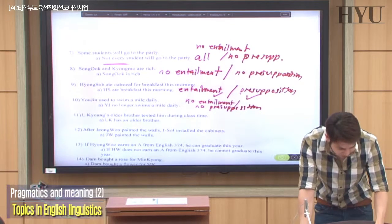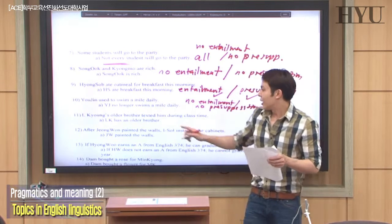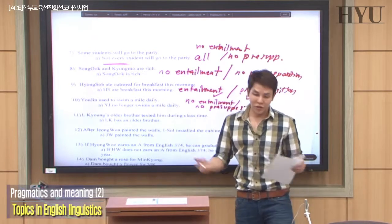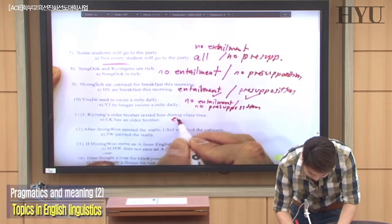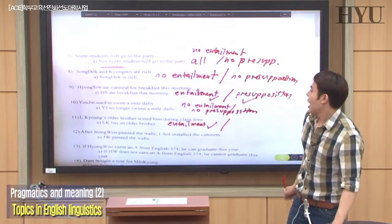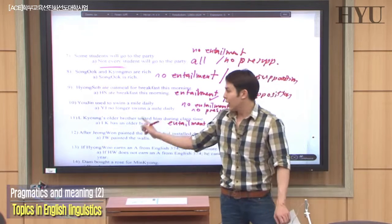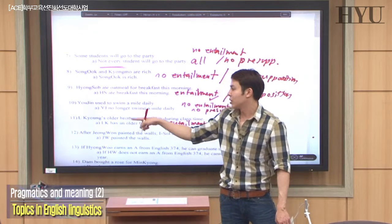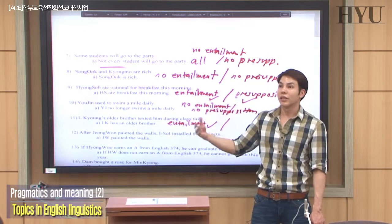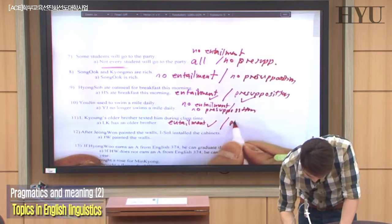Number eleven: 'Al Kyungwon's older brother texted him during class time.' Does it entail he has an older brother? Yes, of course. So entailment yes. For presupposition: 'Did Al Kyungwon's older brother text him during class time?' — yes or no, the person still assumes he has a brother. So presupposition also holds.